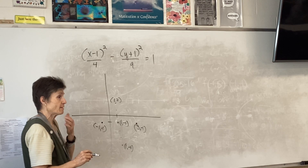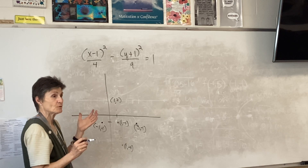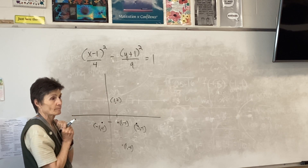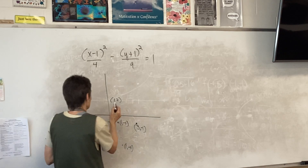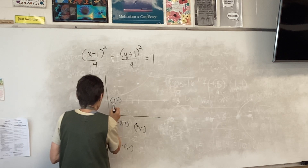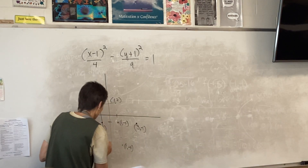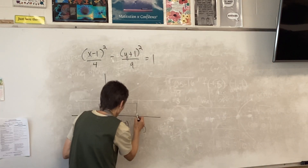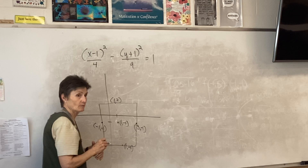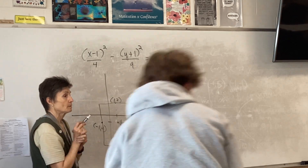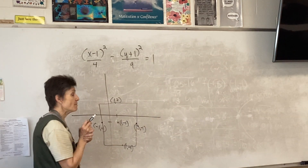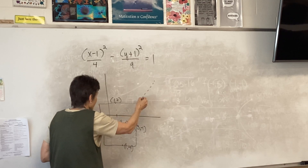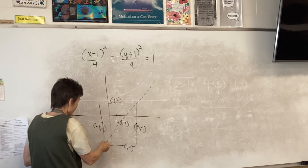So far it's exactly what you did on your quiz. What's different now? We're going to make a rectangle — I'm going to connect those dots, but not with an oval, with a rectangle.